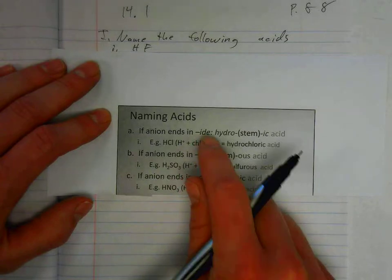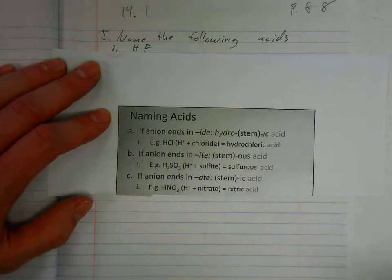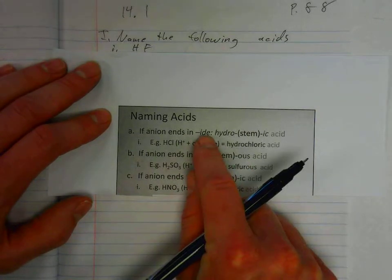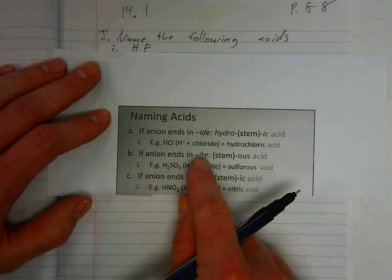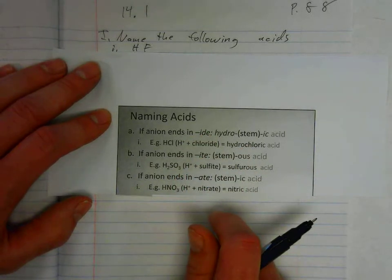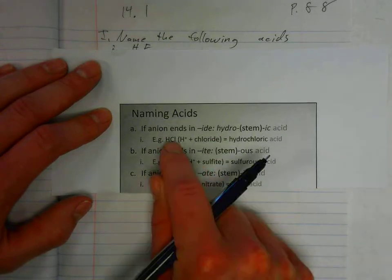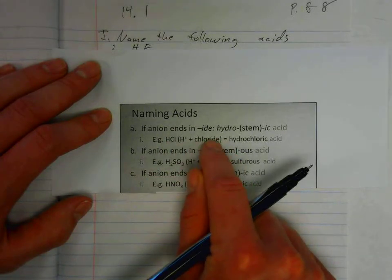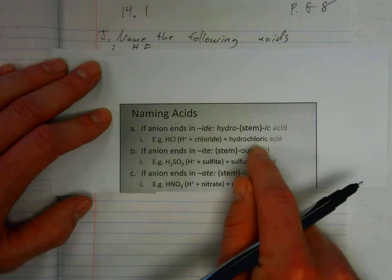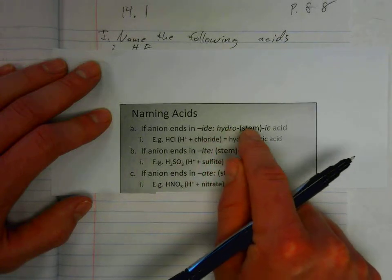We have acids that end in IDE, ITE, and ATE. This is all based on the anion. For example, HCl, the anion is chloride. It ends in IDE. So we follow the rule hydro, stem, ic, followed by the word acid. Hydrochloric acid.